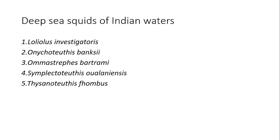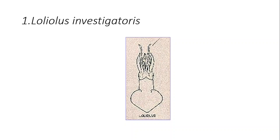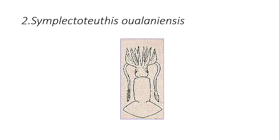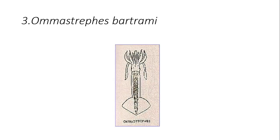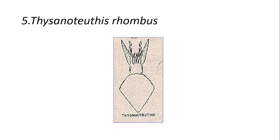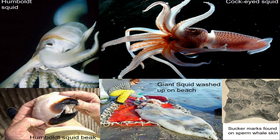The deep-sea squids of Indian waters include: Loliolus investigatris, Onycoteuthis banksi, Ommastrephes bragetti, Sepiotuthis oloensis, Taningia danae, and Thysanoteuthis rhombus. These are their respective images — Loliolus investigatris, Sepiotuthis oloensis, Ommastrephes bragetti, Onycoteuthis banksi, and Thysanoteuthis rhombus. These are the images of these deep-sea squid species.